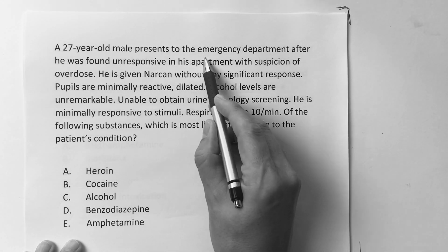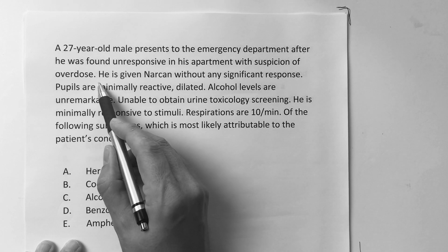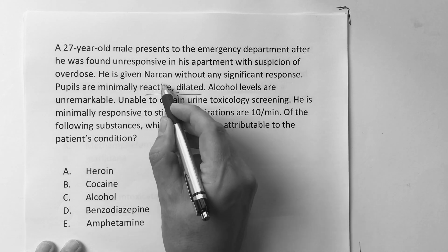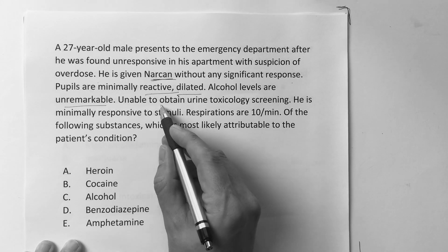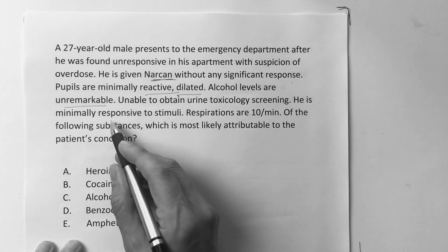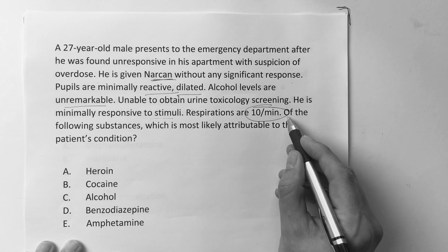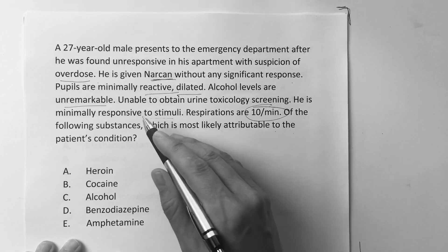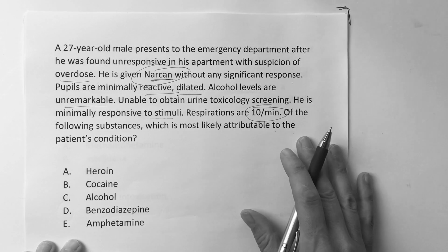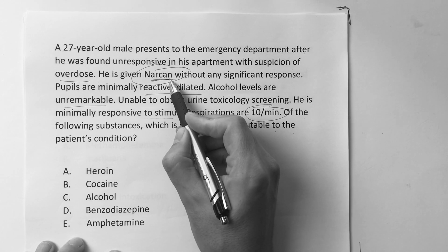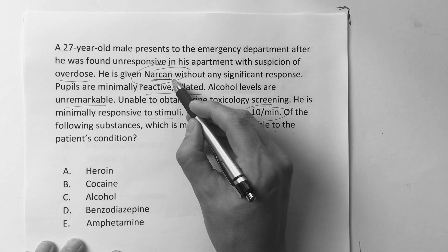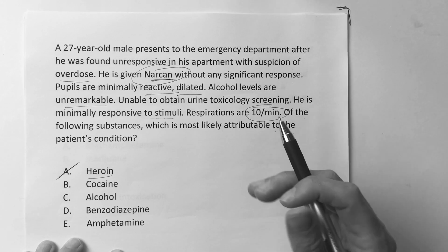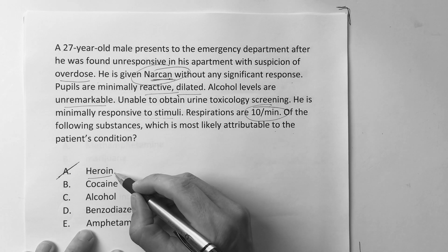A 27-year-old male presents to the emergency department after being found unresponsive in his apartment with suspicion of overdose. He is given Narcan without any significant response. Pupils are minimally reactive and dilated. Alcohol levels are unremarkable, unable to obtain urine toxicology screening. He is minimally responsive to stimuli, respirations are 10. The guy overdosed on something, but they gave him Narcan and he didn't respond — so we can get rid of opioids, since Narcan didn't produce a reaction.